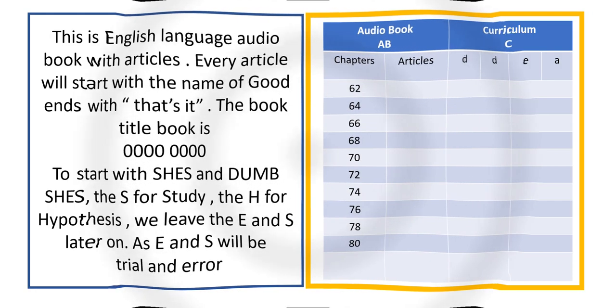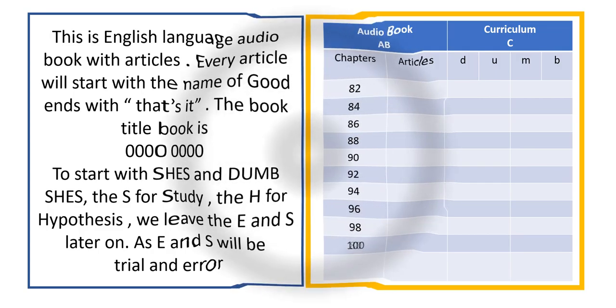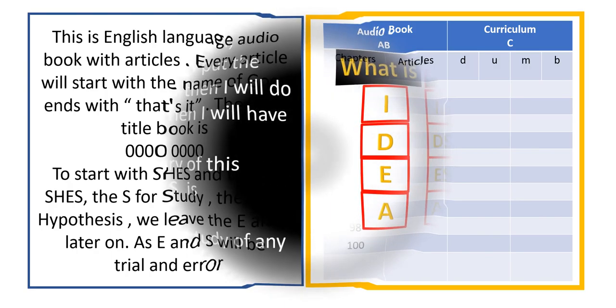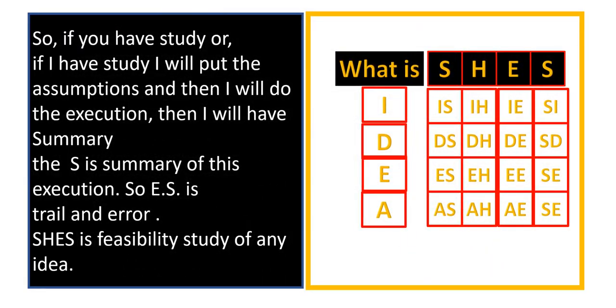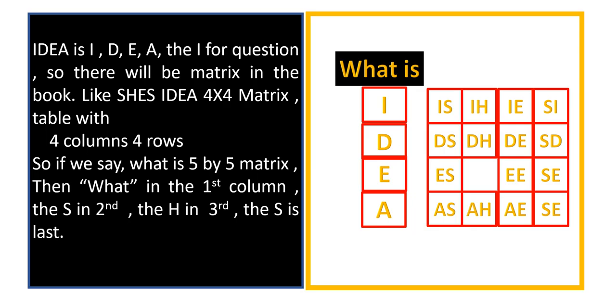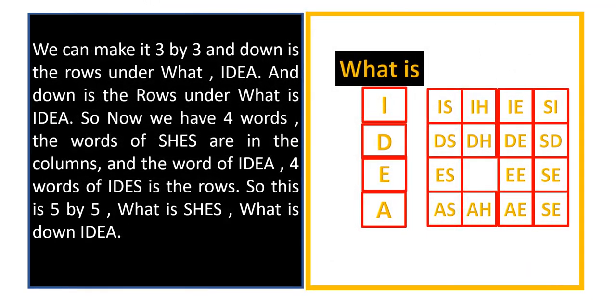I will explain this numbers and this columns and rows. In the below it is the ABC which we know, the title in the above. The beginning in the left, the AB. In the right is the C which is curriculum. In the left it is audiobook.